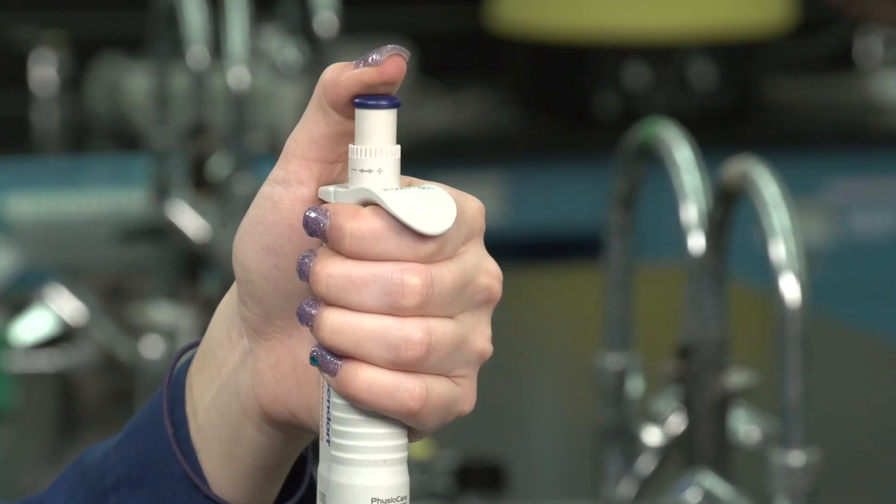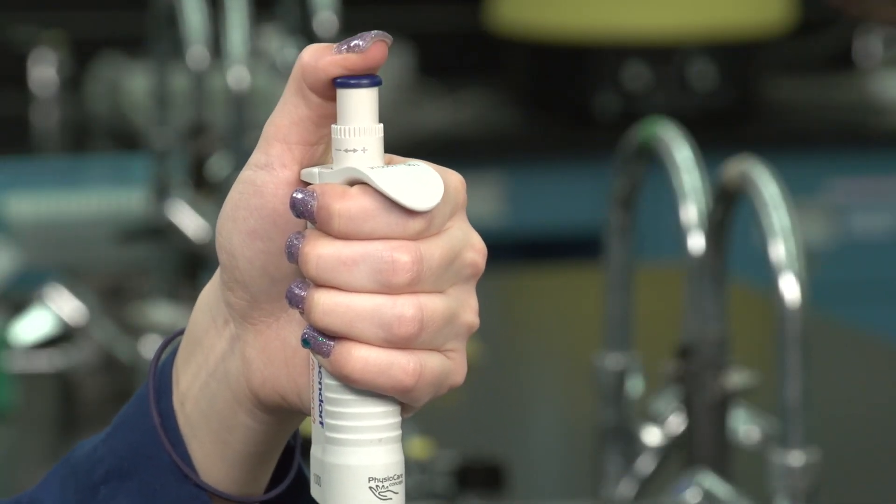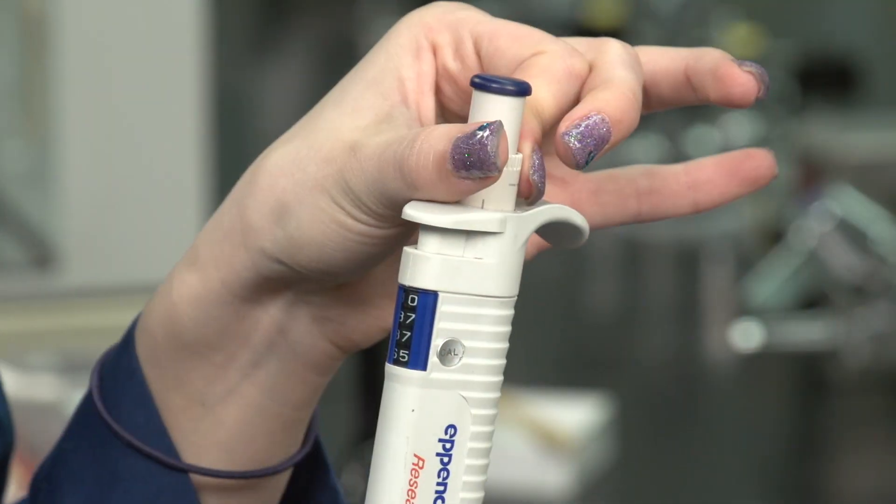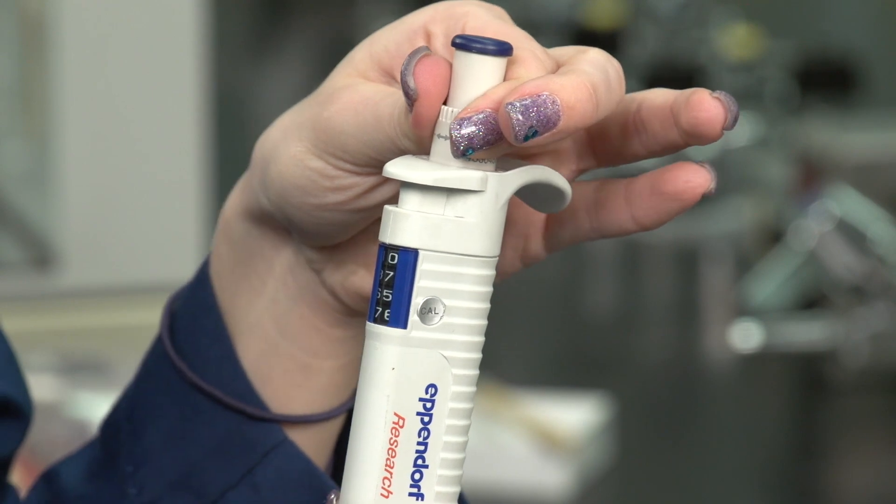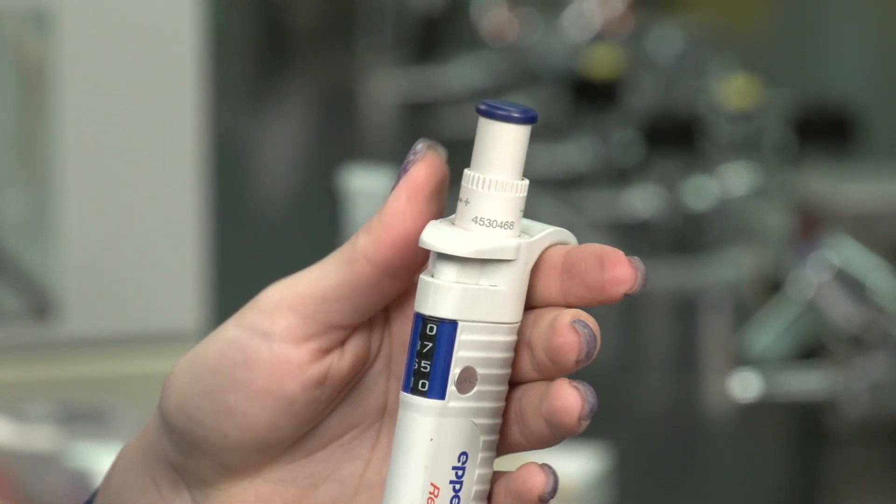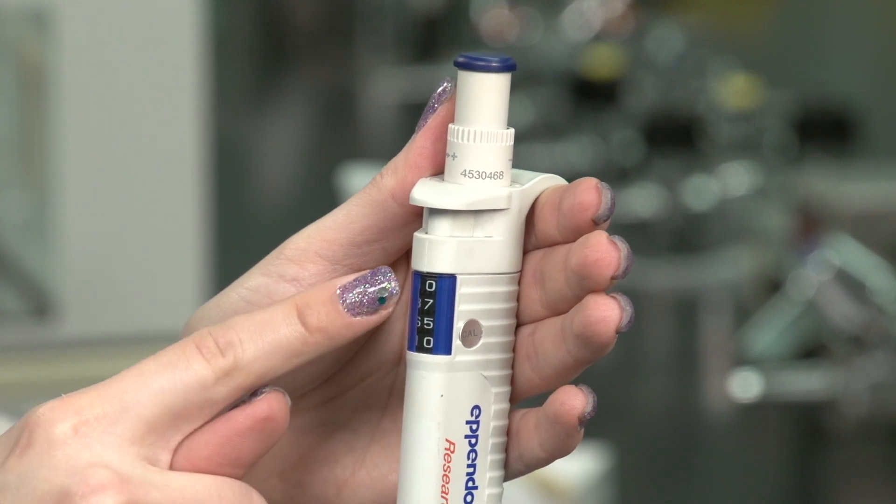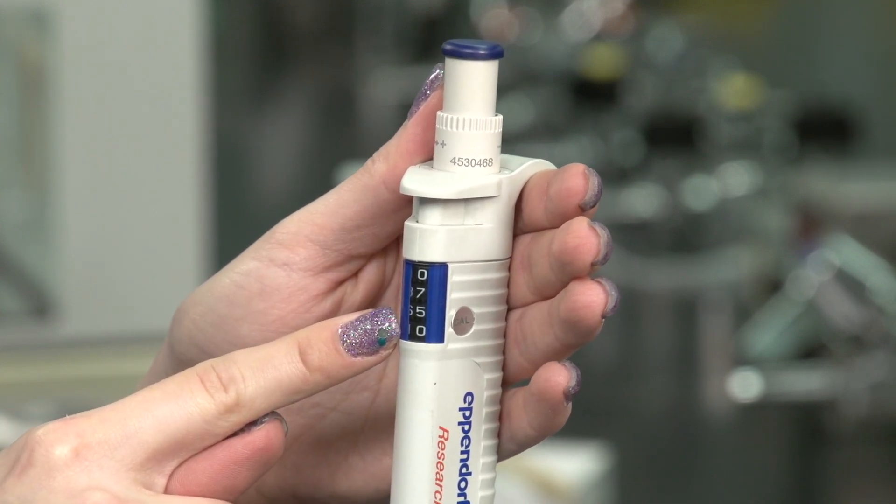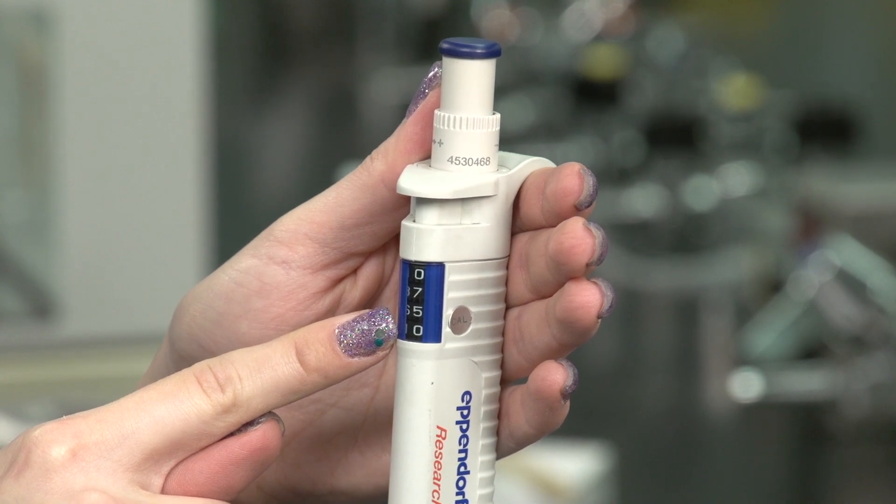Operate the plunger approximately 10 times to redistribute the lubricant and ensure smooth, positive action. To set the volume, rotate the setting ring to go above the desired volume, then return to the desired lower value. The figures in the digital display are read top to bottom. Never adjust the volume beyond 10 to 100 percent of the nominal volume.